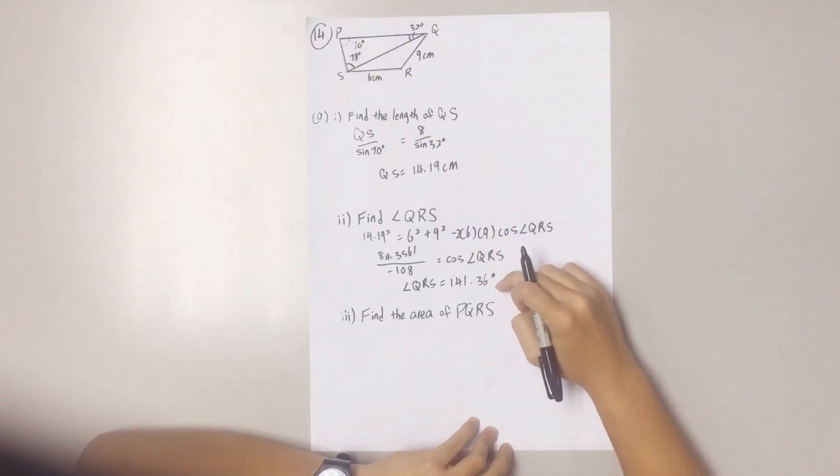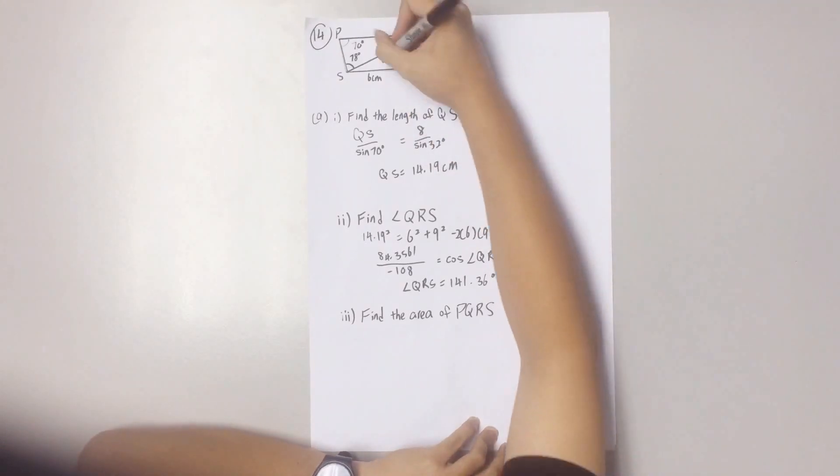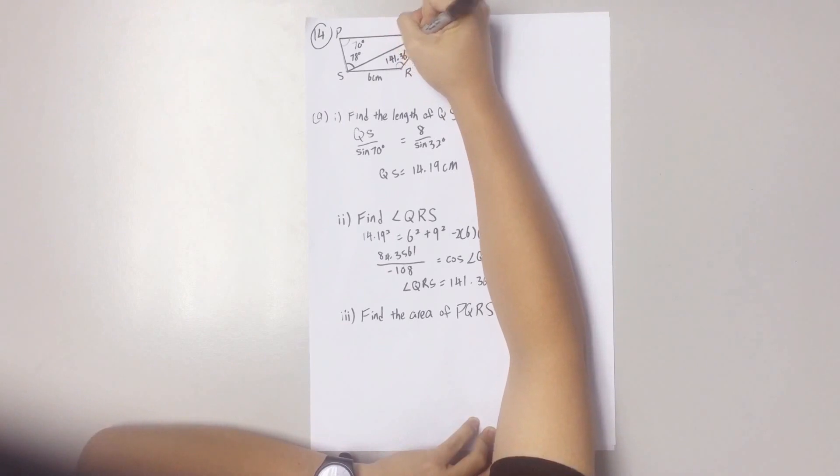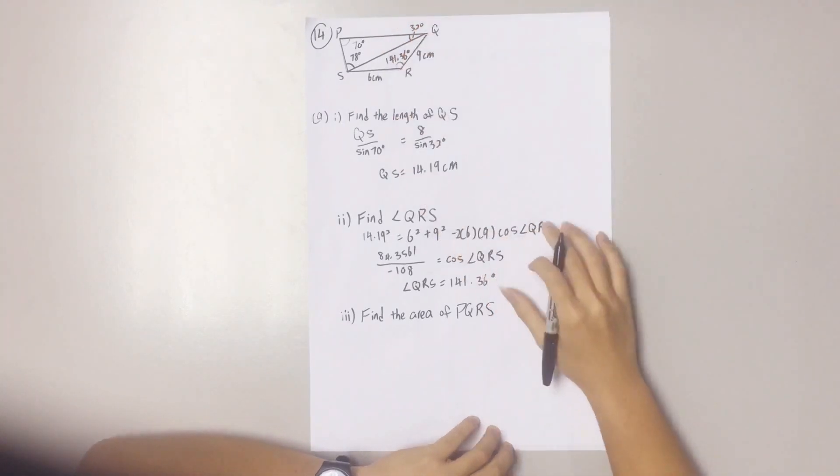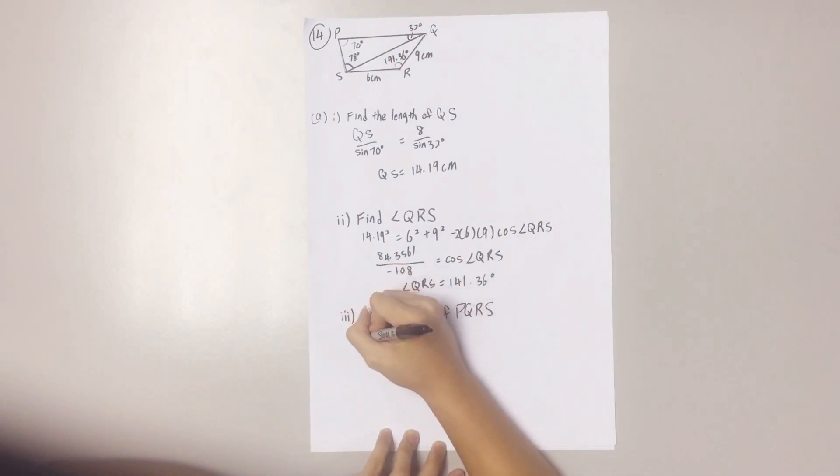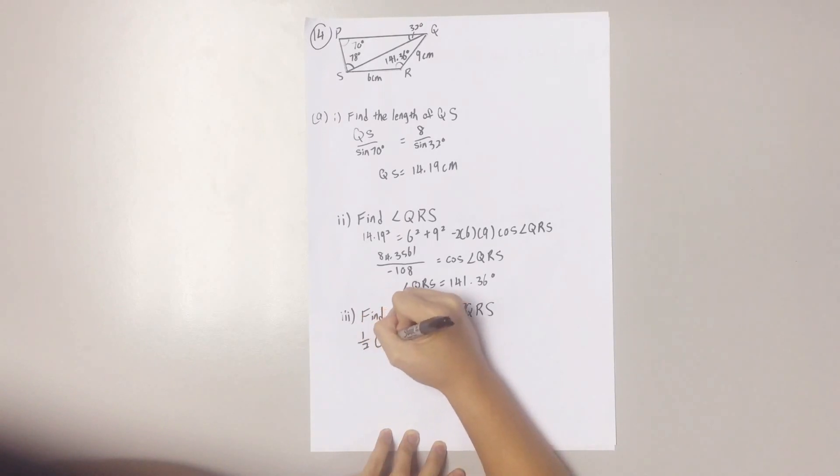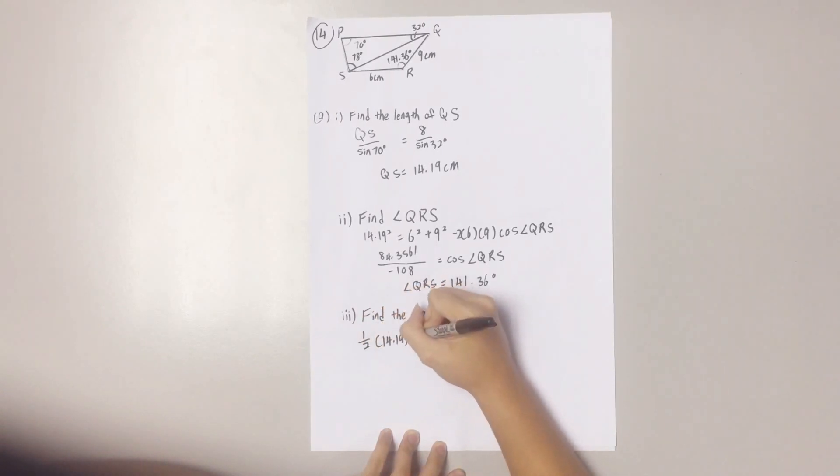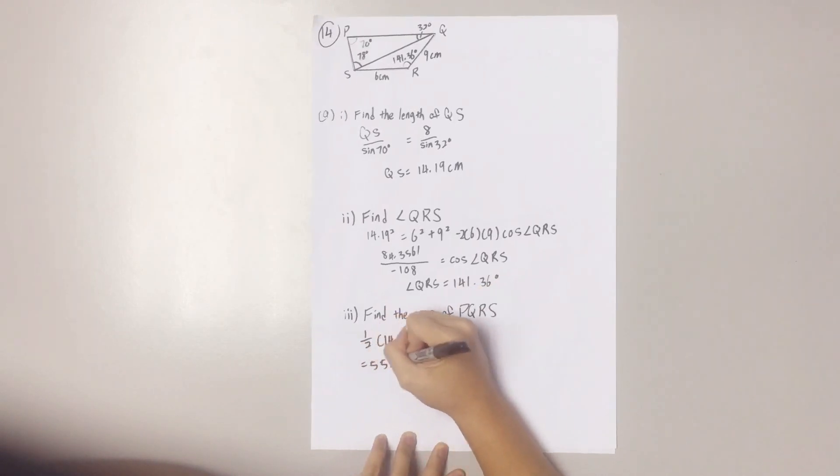Remember to put this value back into the diagram. And this is the area of the first triangle.